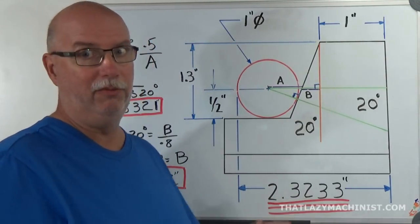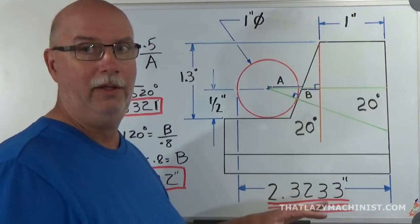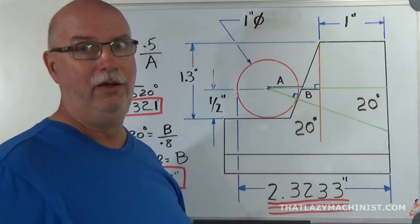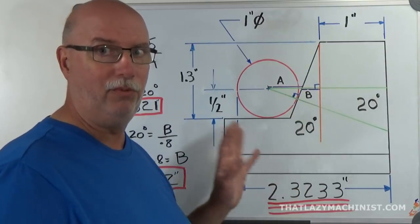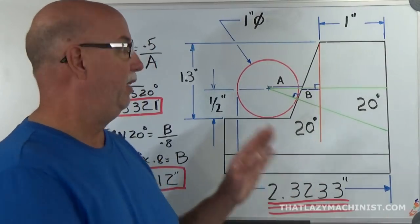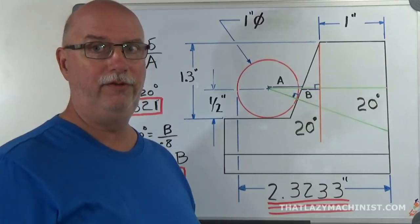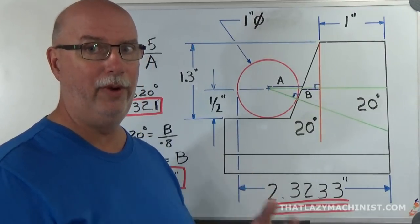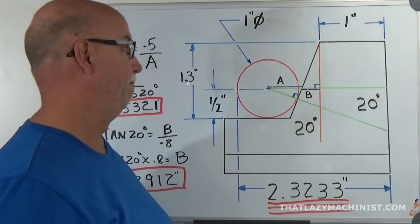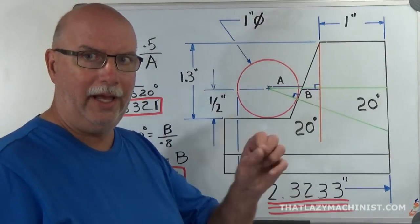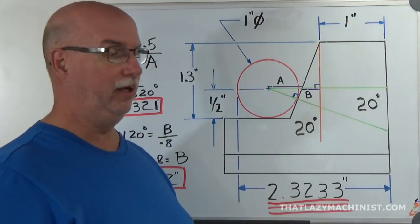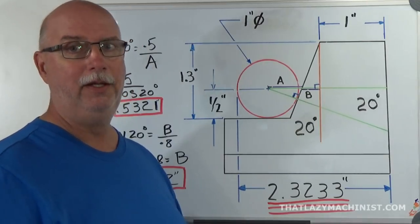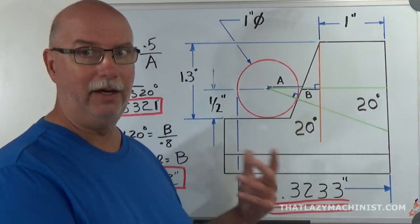Now this measurement won't be good for Emma because I invented overall dimensions for my part, but the principle will apply. This can be measured using a micrometer and a direct measurement technique, but more accurate than that would be a comparative measurement using a surface plate, gauge blocks, and a dial indicator.